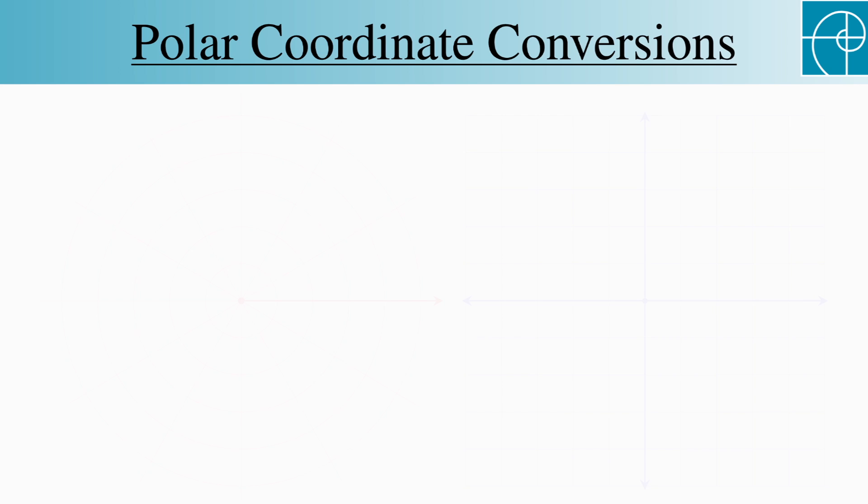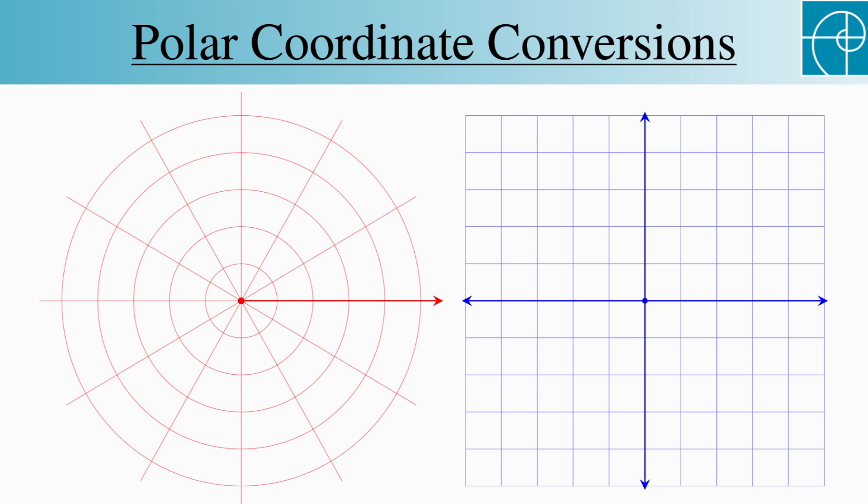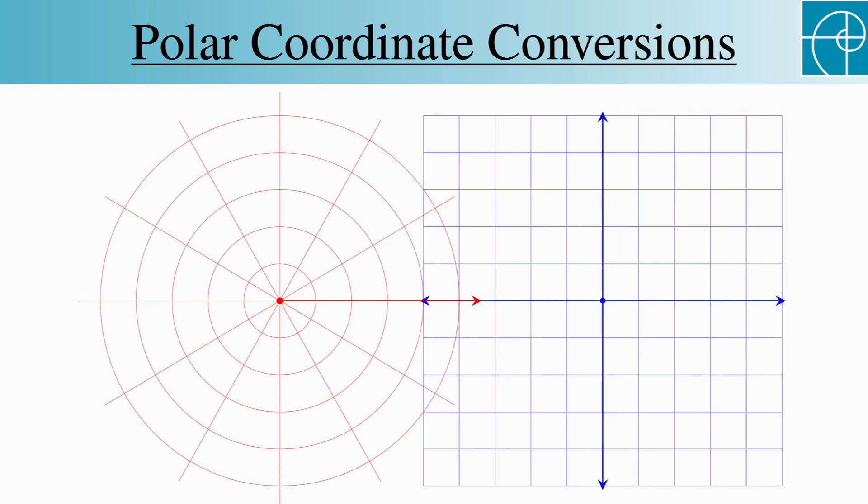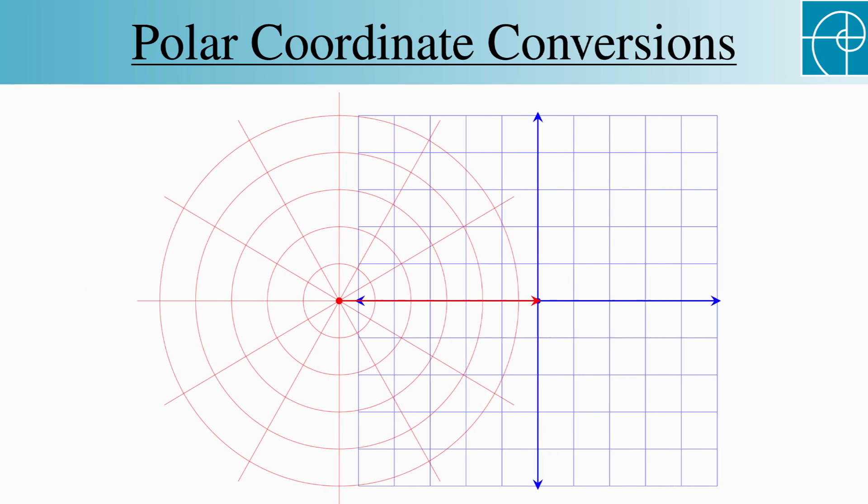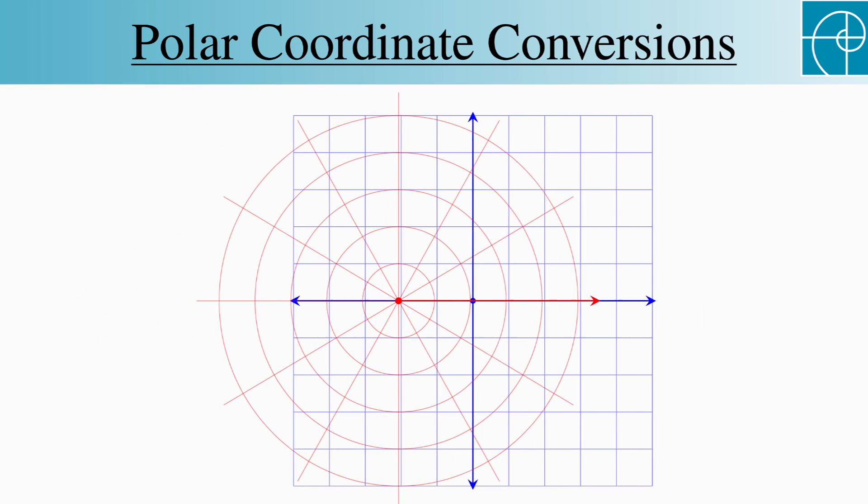We'll start with the unique path. When we convert, we almost always identify the origins of each system and align the polar axis with the non-negative x-axis.